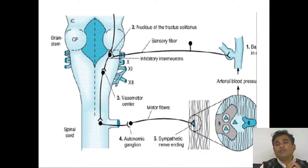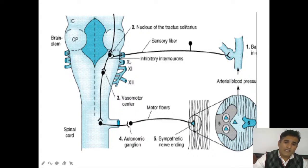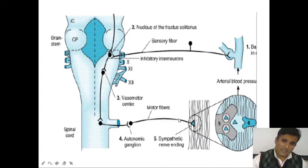Blood pressure is regulated by baroreceptors present in the arteries of the aorta and carotid artery. When pressure gets elevated, the baroreceptor activates the NTS system — Nucleus Tractus Solitarius. Through the NTS, it inhibits central sympathetic discharge, reducing peripheral release of norepinephrine, thereby controlling the sympathetic system.